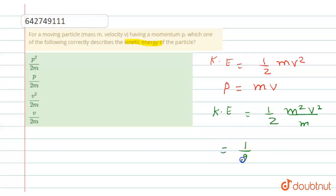And from here, we can write it as 1 by 2, mv whole square means p square divided by m.